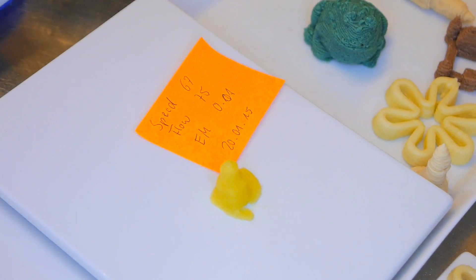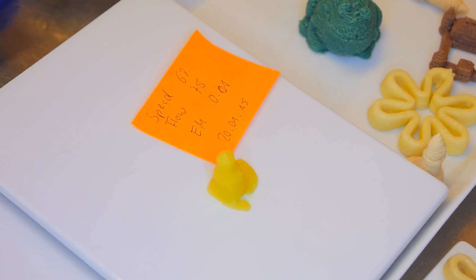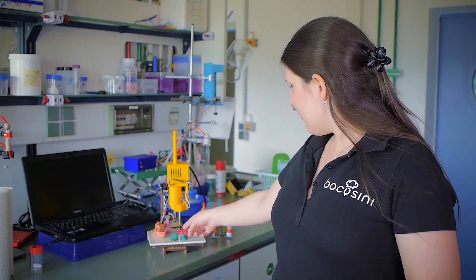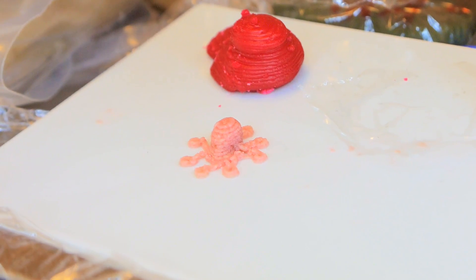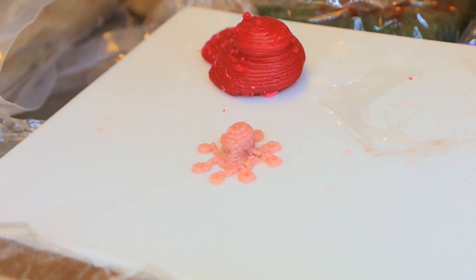The shelf life of a printed object depends on the food. If it is printed from potato puree, it dries very fast and within a day it doesn't look nice anymore. But if you have marzipan like this one, they stay like several weeks. We have some from the beginning, so six months old. They still look nice but I would not recommend to eat them because of course the fats inside will not taste so good anymore.